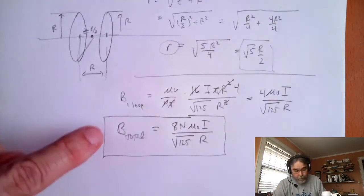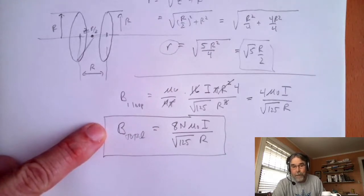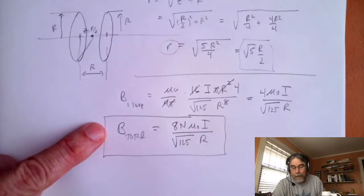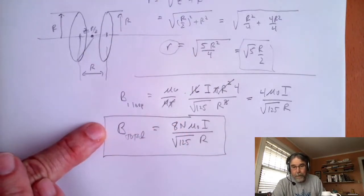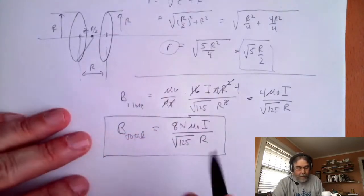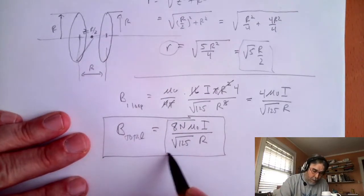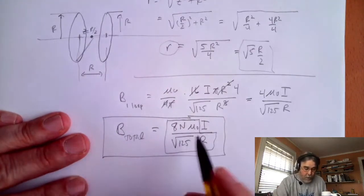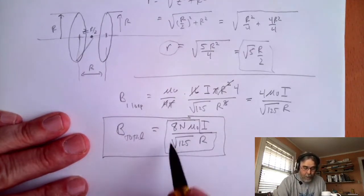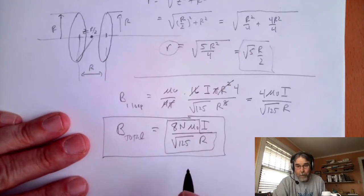The good news is that same expression works for both experiments — the experiment with the permanent magnetic dipole oscillating in a magnetic field used the same coils. So same N = 72, same R = 0.33 meters. Different currents, so you'll have to use different currents. But everything else is the same, so you can calculate this constant once and use it in both experiments.